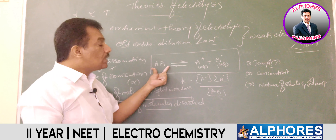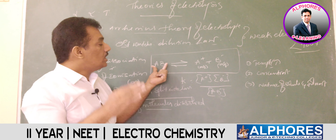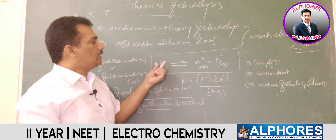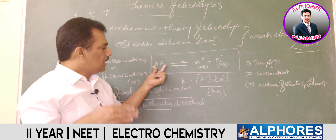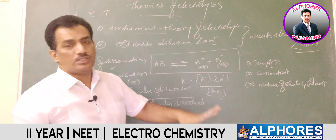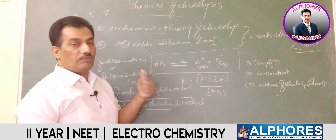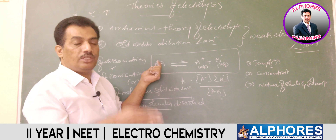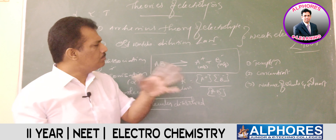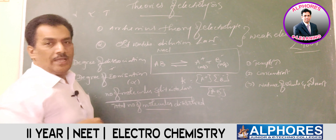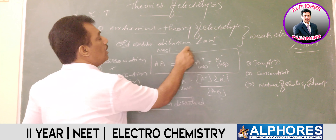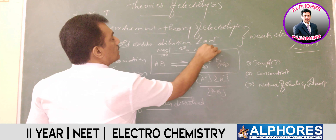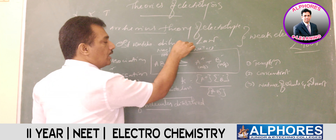Regarding concentration: in electrochemistry, concentration of the electrolyte refers only to molecules in molecular form, not to ions. For a strong electrolyte like NaCl, when 100 molecules dissolve, all dissociate completely — the molecular concentration of NaCl becomes zero. But for weak electrolytes, complete ionization never occurs, so some undissociated molecules always remain.